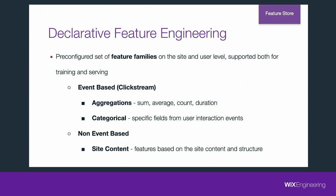The third feature family we support, which is non-event-based and thus much harder, is site content — meaning features based on the site content itself and structure. Things like number of components, number of text components in a site, number of images, dominant language, and much more.